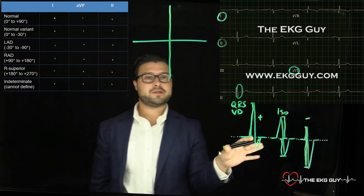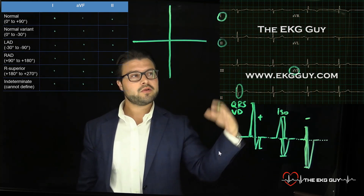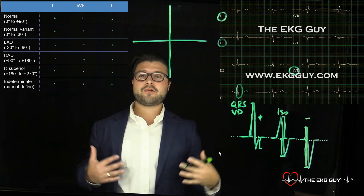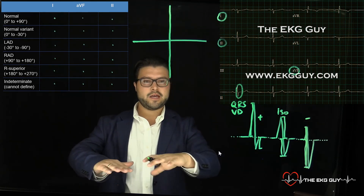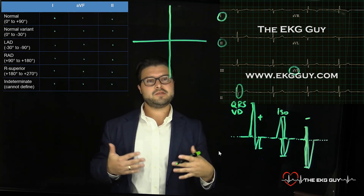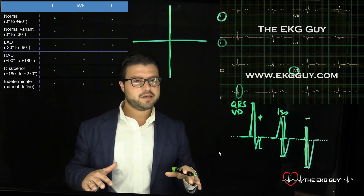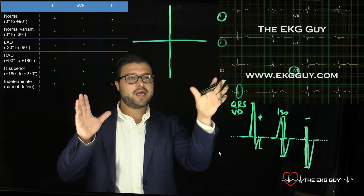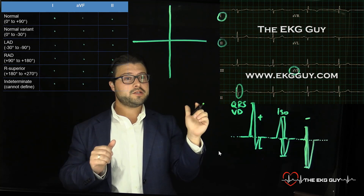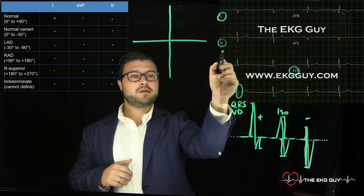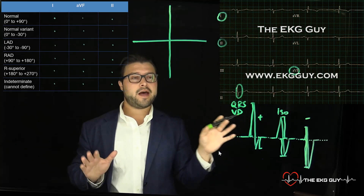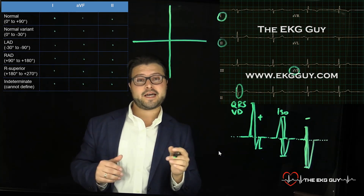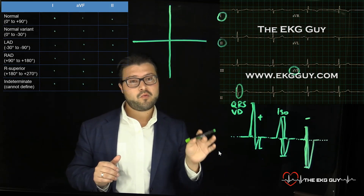Now, when we look at these complexes, notice the leads placed here are all limb leads because we're looking at the axis in the frontal plane. There's a horizontal plane and a frontal plane — in most cases when you're asked about this, it's the frontal plane. The ones you want to be aware of are the three circled here: lead I, lead II, and AVF. Those three essentially get you there. The other leads can help direct you to a more exact axis, but those three are sufficient.